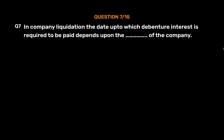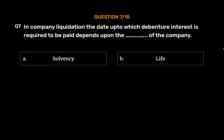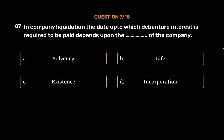Question number 7. In company liquidation, the date up to which debenture interest is required to be paid depends upon the what of the company? Option A: Solvency. Option B: Life. Option C: Existence. Option D: Incorporation. The correct answer is Option A — Solvency.